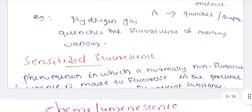Sensitized fluorescence is the phenomenon in which a normally non-fluorescent substance is made to fluoresce in the presence of a photosensitized substance. The photosensitizer absorbs light and emits it, causing the non-fluorescent substance to exhibit fluorescence.